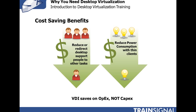What about the cost? With VDI, you can reduce or redirect desktop support staff to other tasks, and you'll reduce power consumption with thin client devices — making your IT people more efficient and saving electricity. VDI saves on operational expenses, not capital expenses. It shouldn't cost more in hardware and software in the long term; the savings come from day-to-day operational expenses. In a later lesson, there are VDI return-on-investment and total cost of ownership calculators where you can enter your company's information — IT support staff, number of end-user devices, time and money spent — and it will calculate how much you'll save by implementing desktop virtualization.